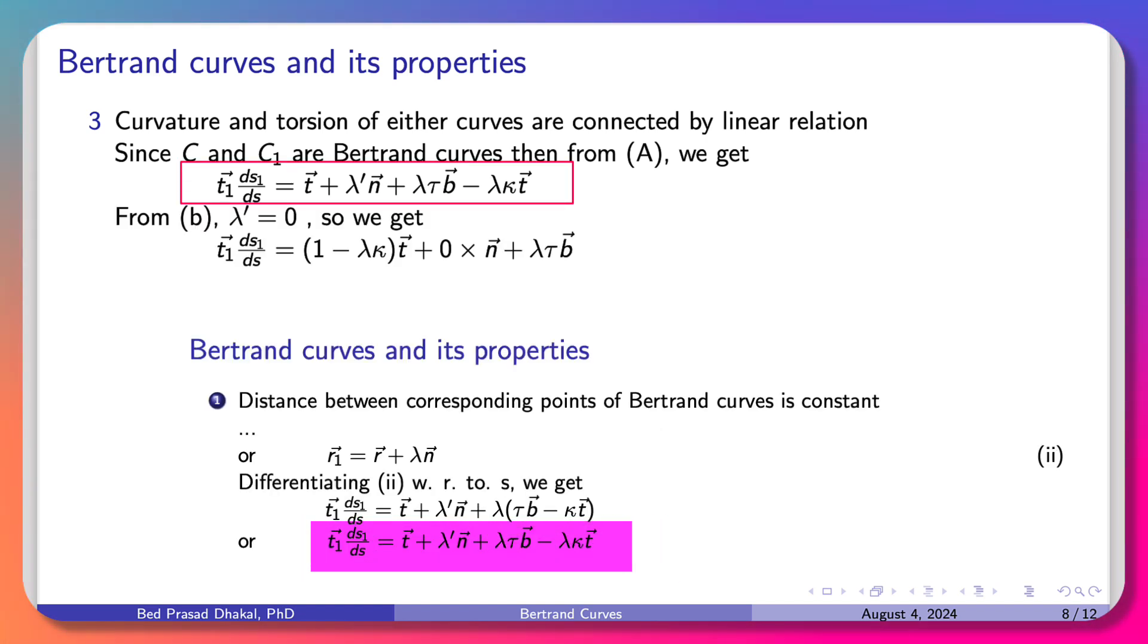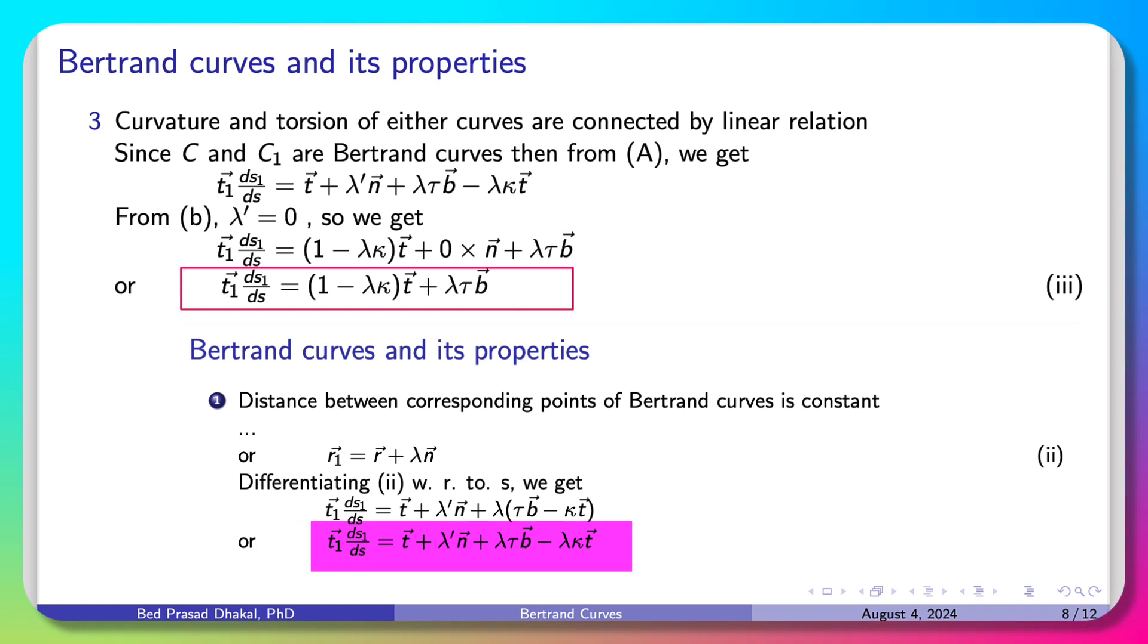So, λ' equals to 0. I am going to show this expression: τ1 times ds1 by ds is equal to 1 minus λκ times t plus λτ times b. This is equation 3.